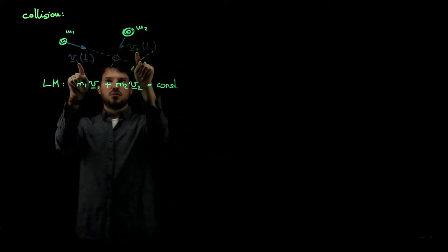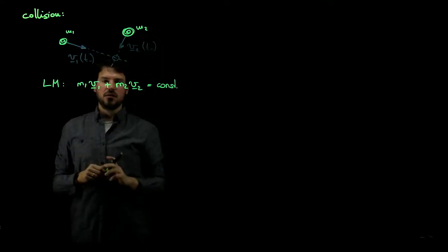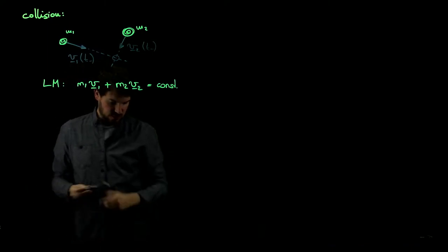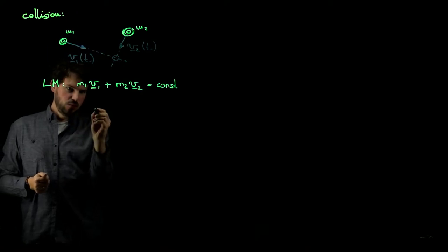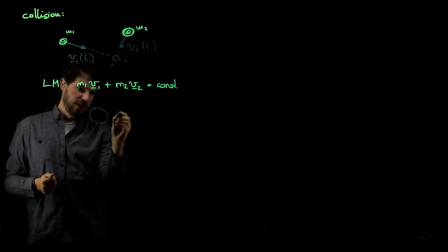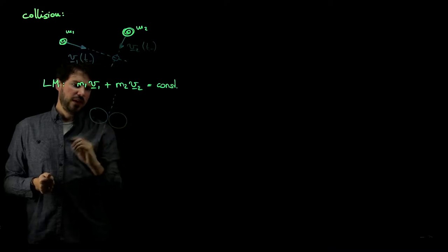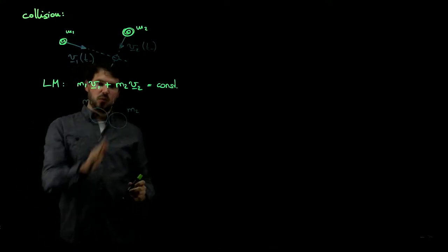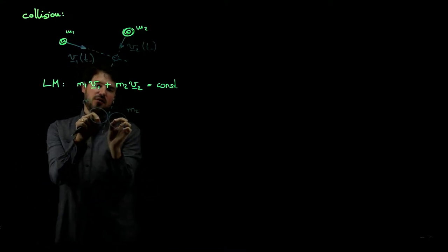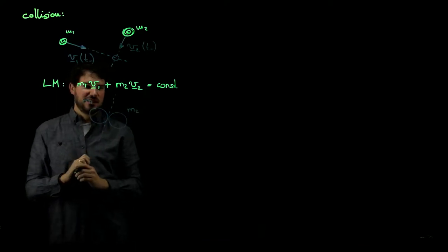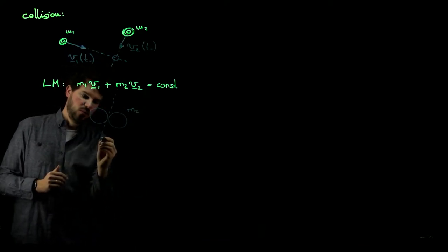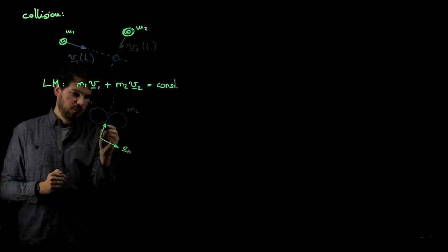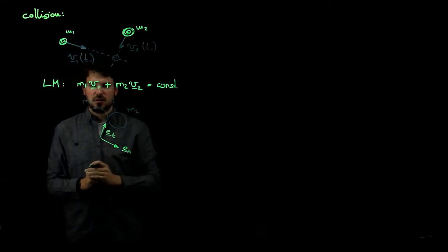The total linear momentum — mass one times velocity one plus mass two times velocity two — remains constant during the collision because they only exchange forces with each other, not with the environment. If we know the velocities prior to impact, this must remain constant. We define the plane between the two particles — M1 and M2 — and from that we define the normal and tangential components.